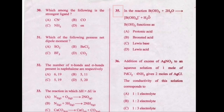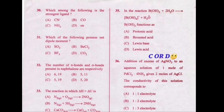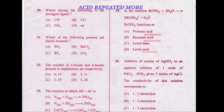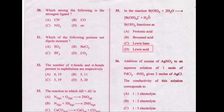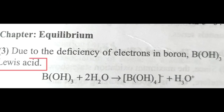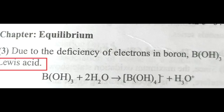In this question, the probability of the correct option being option C and option D — both are having a similar start. To decide the correct answer, we take the help of other options. The word 'acid' is being repeated more, so this supports option D. Therefore our correct answer will be option D. If you're solving without tricks, imagine how much you have to do — you can verify your answer here.